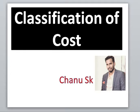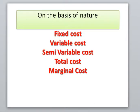On the basis of Nature of Costs, the following costs apply: Fixed Costs, Variable Costs, Semi-Variable Costs, Total Costs, and Marginal Costs. These have already been explained in lesson number 7, where you can find the differences between Fixed Costs and Variable Costs.